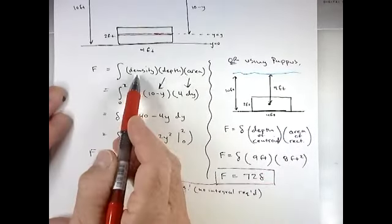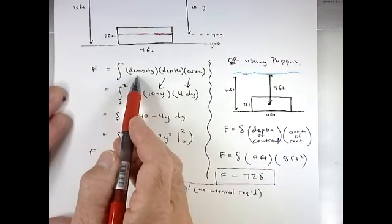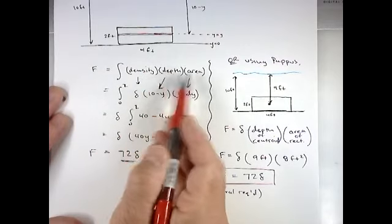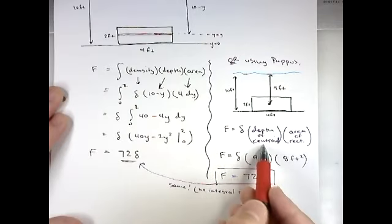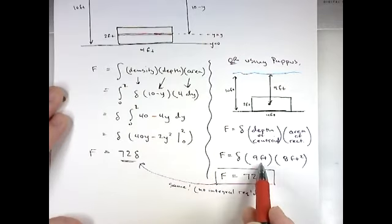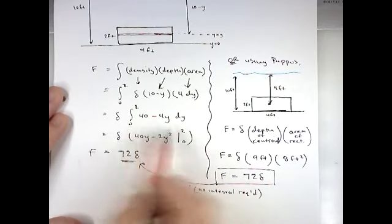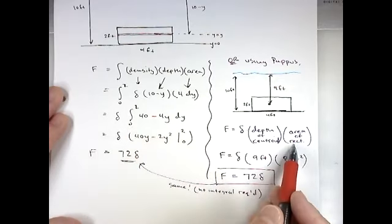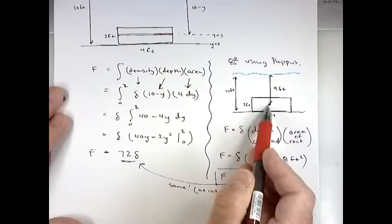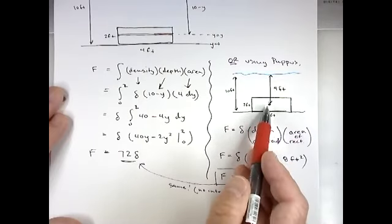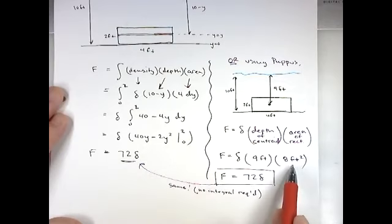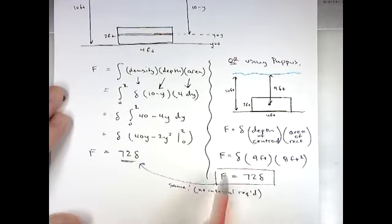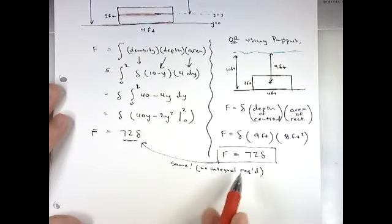And using your same definition of fluid force, density times depth times area. Density, it would be the depth of the centroid, which is 9 feet. And instead of doing individual areas of horizontal strips, we would multiply that by the entire area of the rectangle, because we're pretending it's acting right at the centroid, which is 2 feet by 4 feet, 8 square feet. Notice we get the same answer, 72 delta. No integral required.